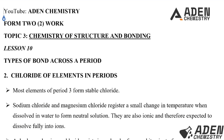Hello students, welcome. Previously in lesson 9, from Period 2 to Period 3, we were dealing with the chlorides of elements in Period 3, which we explained in terms of structure and bonding. Today we want to proceed to the second part — chlorides of elements in Period 3. Most elements of Period 3 form stable chlorides. We noted that sodium chloride and magnesium chloride register a small change in temperature when dissolved in water to form neutral solutions.